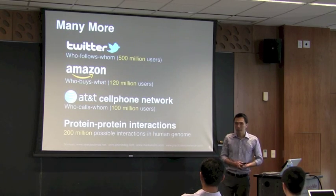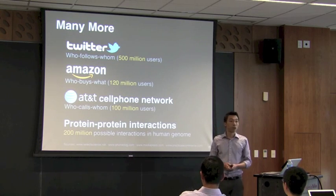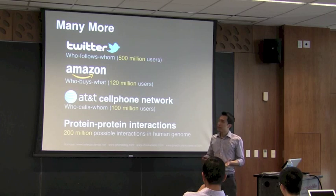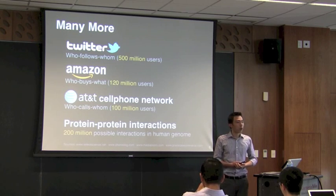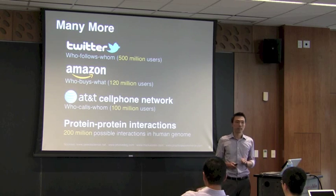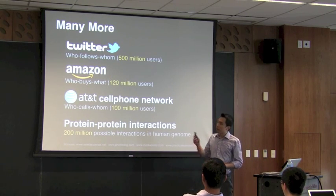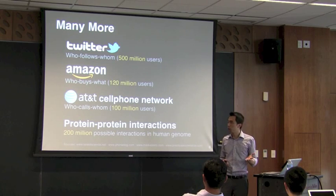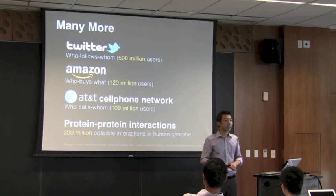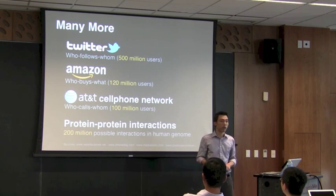There are many more examples. On Twitter you can construct a who-follows-whom graph where each node is a person. From Amazon you can find out who buys what, where each node is either a person or a product. With cell phone networks you can find out who calls whom. And in biology, you can find out how proteins interact with each other, constructing a protein-protein interaction network.